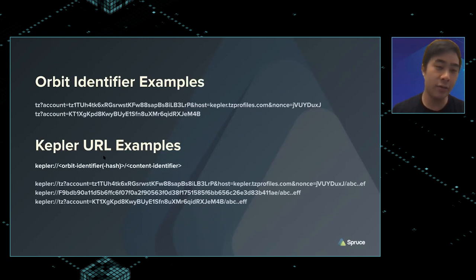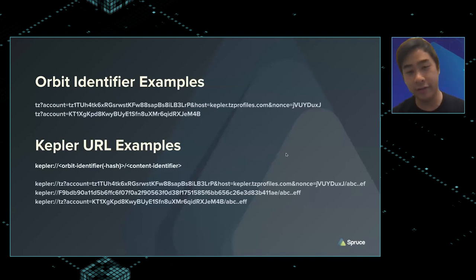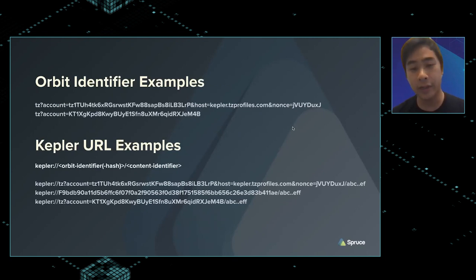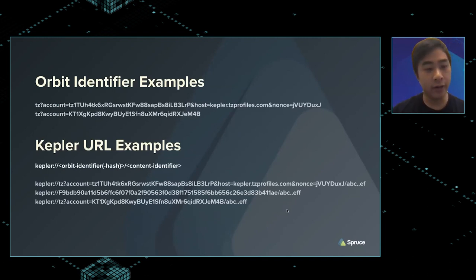To turn a Kepler identifier into a Kepler URL, you either put the identifier as-is or you hash it, and then you can refer to the content identifier. The reason for hashing is to preserve privacy — if you add a nonce, someone can't discover the hash unless they have this pre-shared item, giving you a kind of fixed yet private identifier.